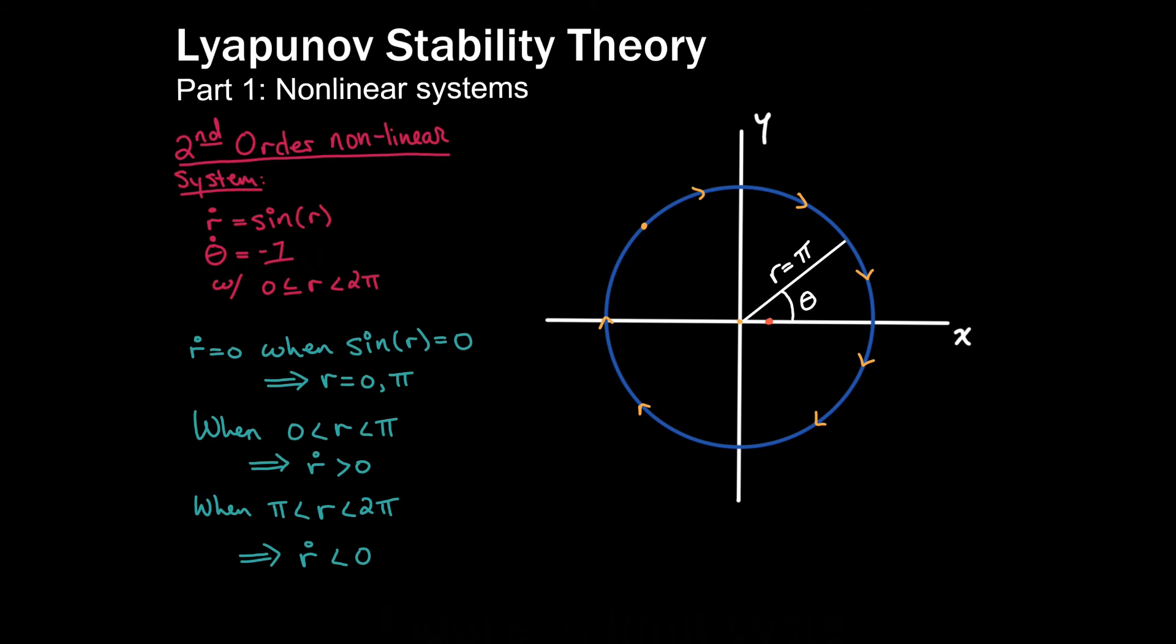Well, in this range, we know that my radius is going to increase. And, of course, I am going to continue to evolve with an angle changing at a constant rate of negative one. So, I would spiral outward and tend towards this cyclic behavior or the invariant set that I was just talking about.